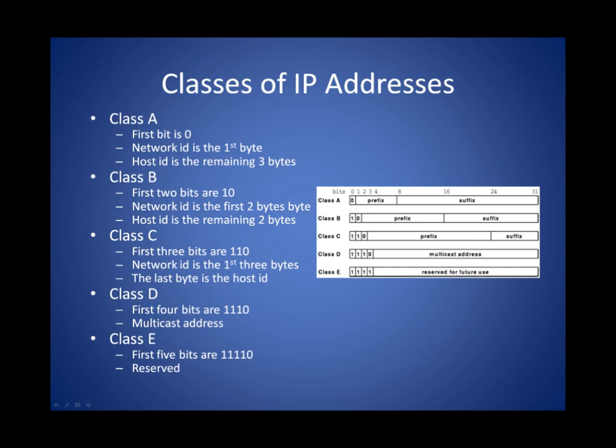Before we can talk about masks, we need to talk about classes. The original architecture for IP addressing on the Internet was based on classful addressing. Hosts were assigned to a Class A, B, or C network, and these networks vary in size — Class A networks are very large in terms of number of hosts, and Class C networks are much smaller, but there are a lot more Class C networks than Class As. Each class is identified by a set of binary values in their starting octet.